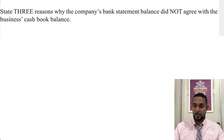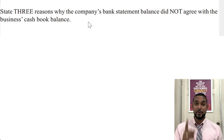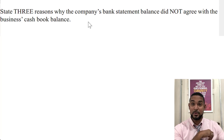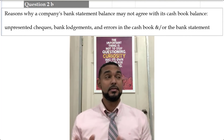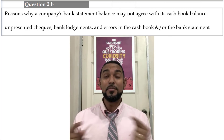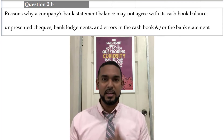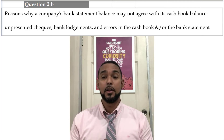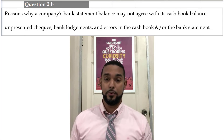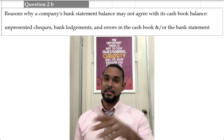State three reasons why the bank statement balance does not agree with the cash book balance. Check my bank rec playlist for more detail. Essentially, the information in both of them is different. Major reasons include: unpresented checks, bank lodgements, and errors in either the cash book or bank statement or both. An unpresented check is when you write a check and pay somebody — they have to carry that check to the bank for the money to leave your account.